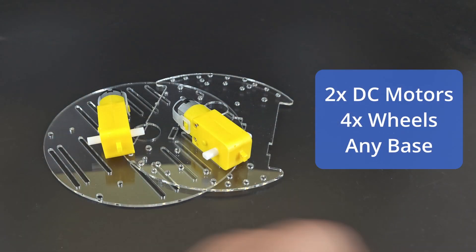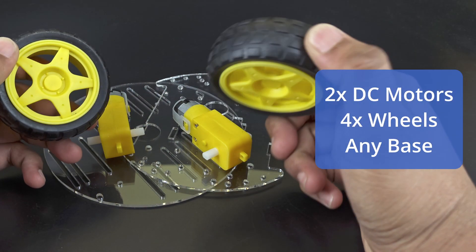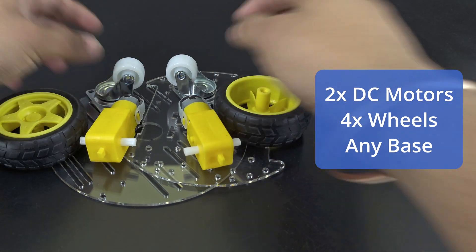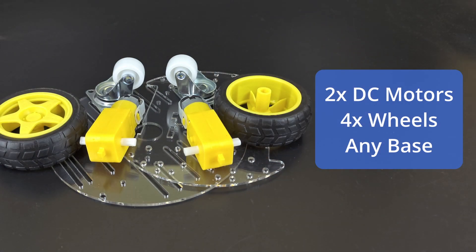As for mobility, we need two motors and tires, two support wheels, a base to set everything up. I got this as a kit, which makes it a bit easier to assemble.